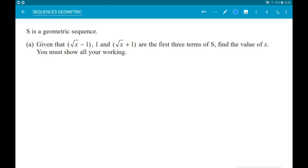Okay, so, quite a tricky looking one, but we know, because this is geometric, we can do root x minus 1 times a number, and we get 1. Now we don't know what that number is, but we know, when we multiply 1 by the same number, we get root x add 1.